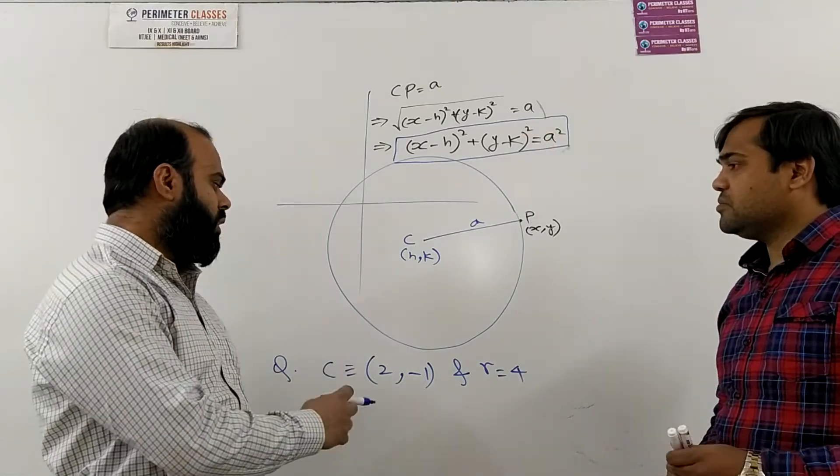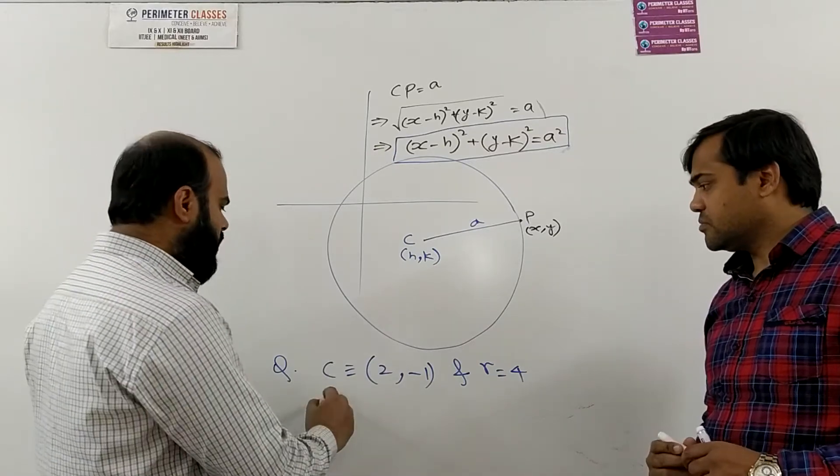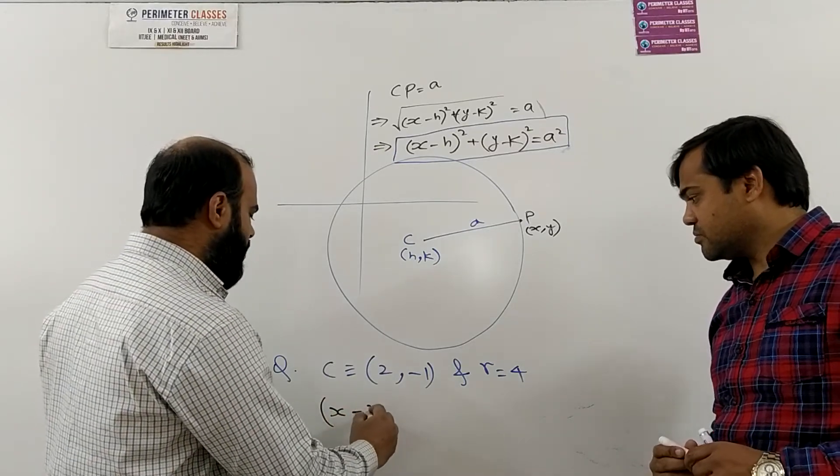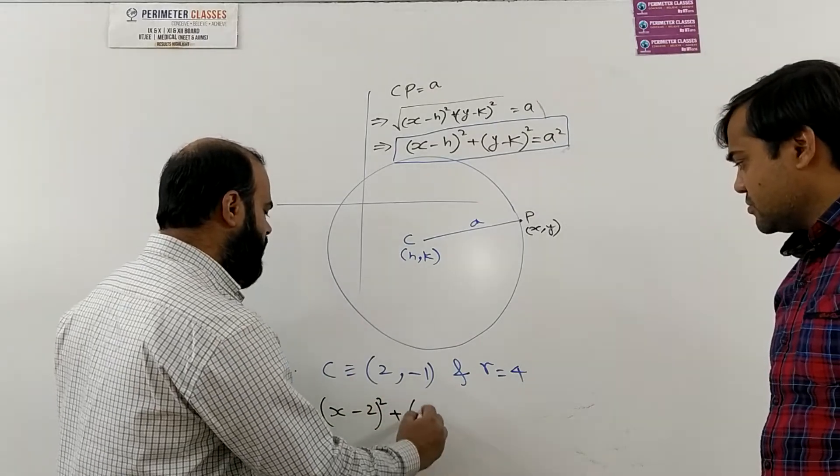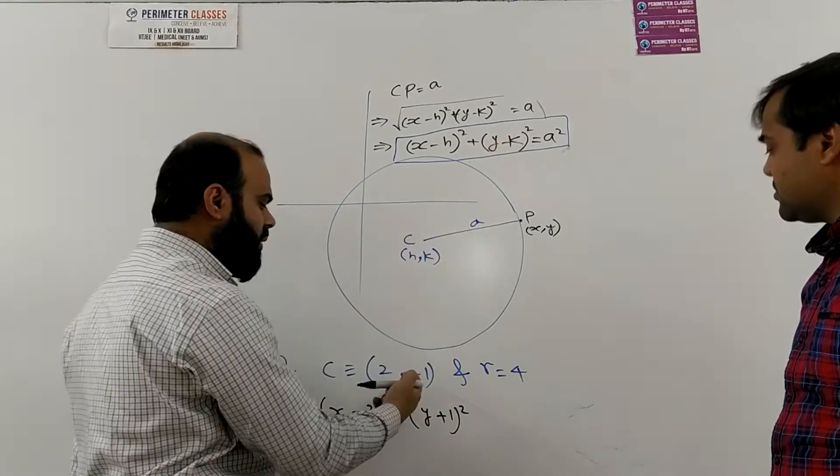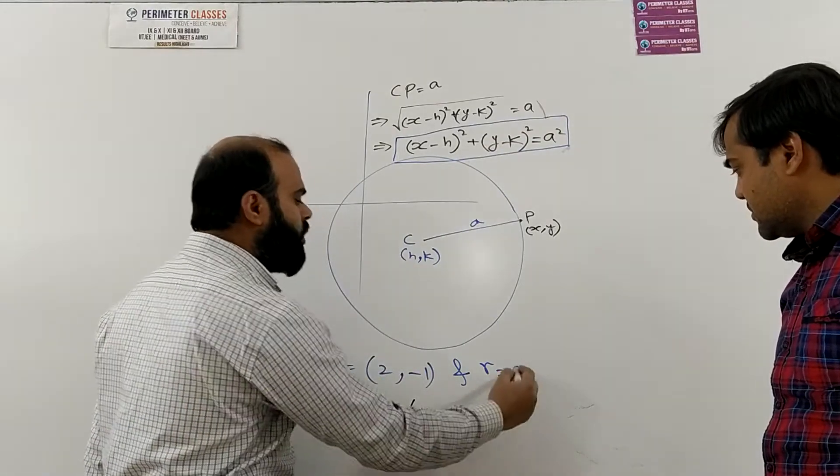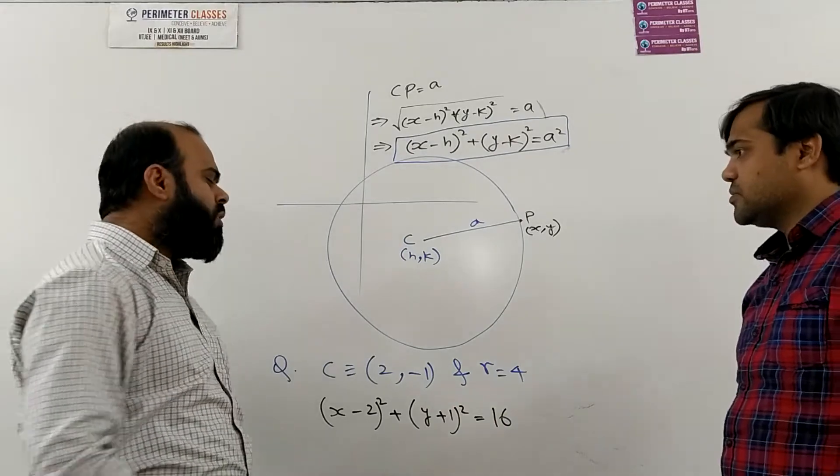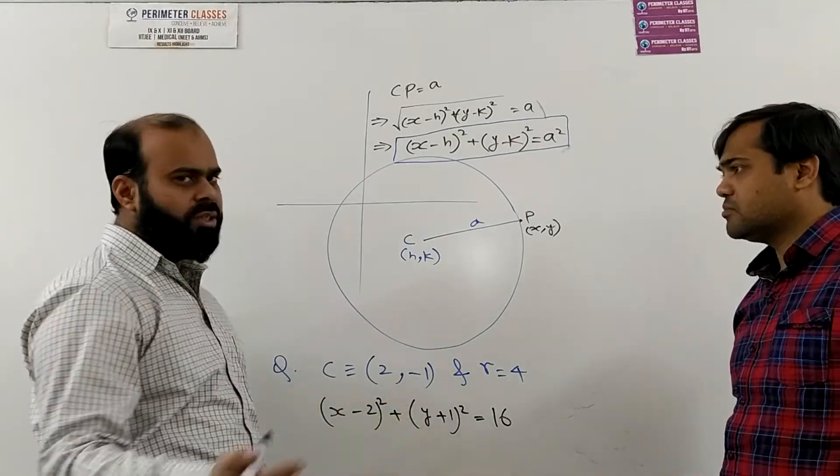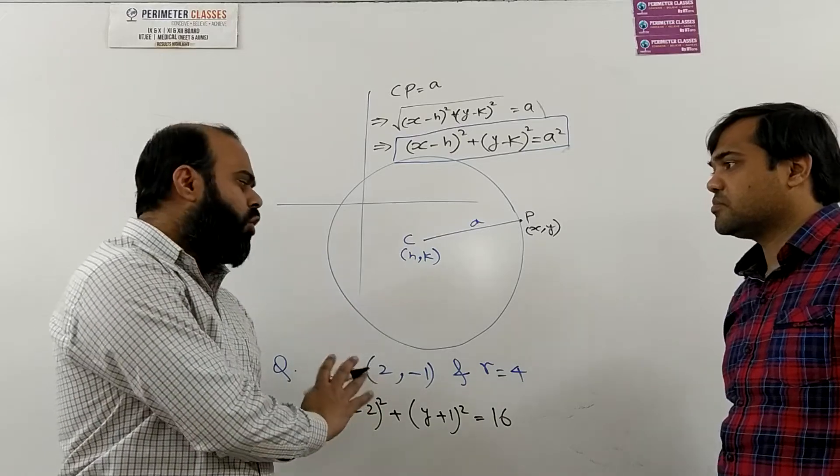So here I think they can easily do it, they can write it as x minus 2 whole square plus y plus 1 whole square because k is actually minus 1 so it will become minus minus 1 plus 1 is equal to square of 4 which is 16. We can open this bracket and further simplify it but that is not needed right now we are not going beyond this.